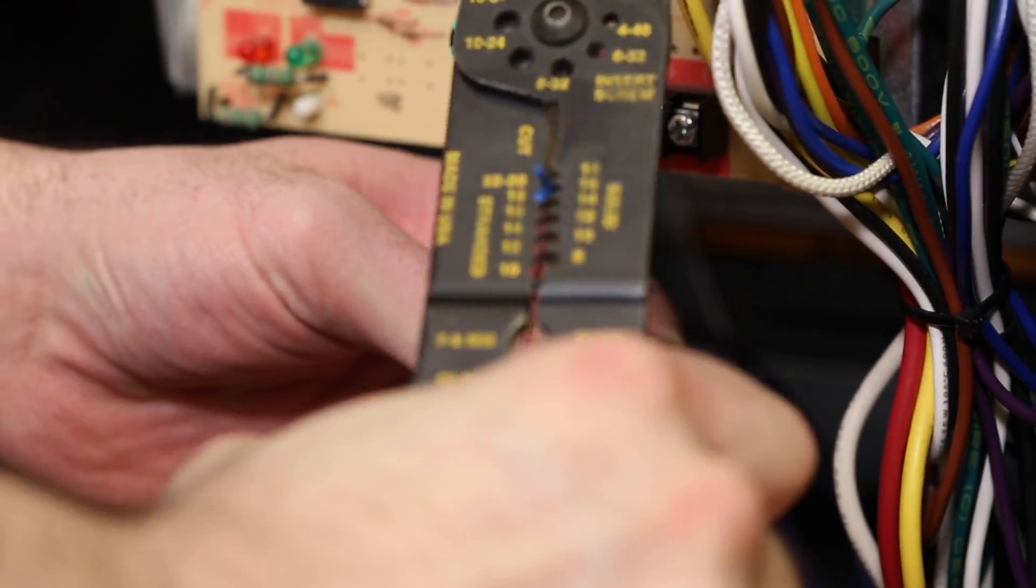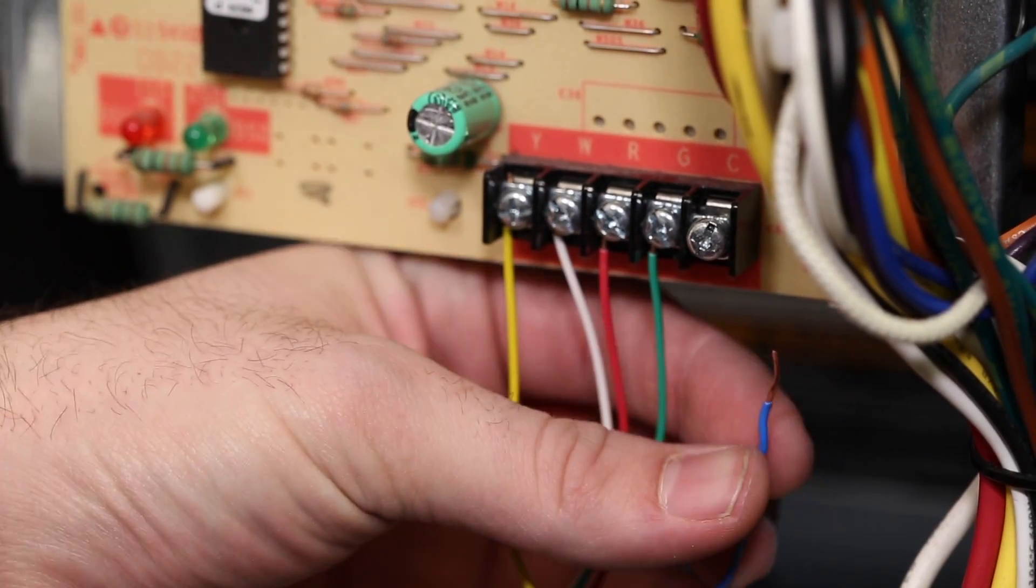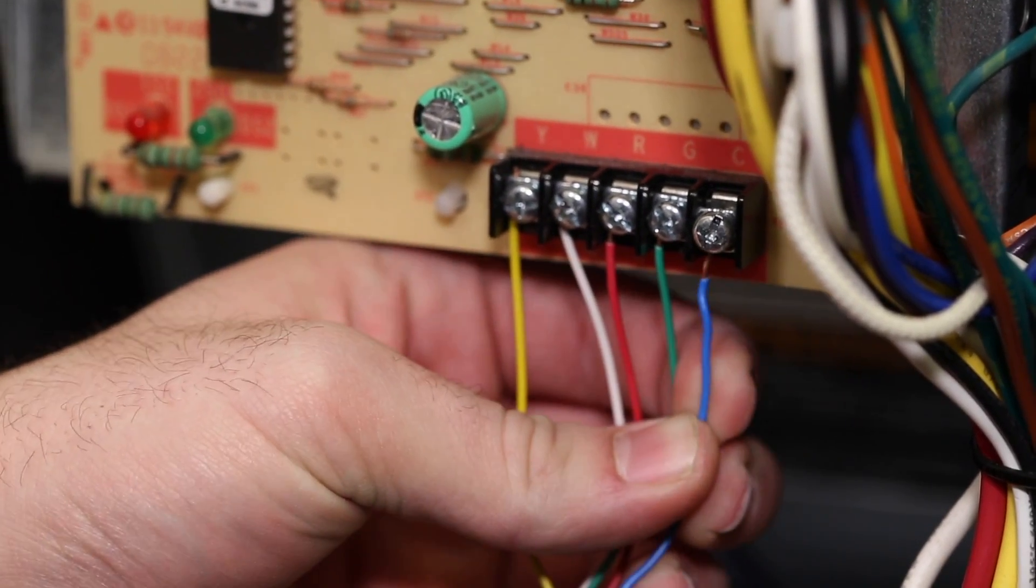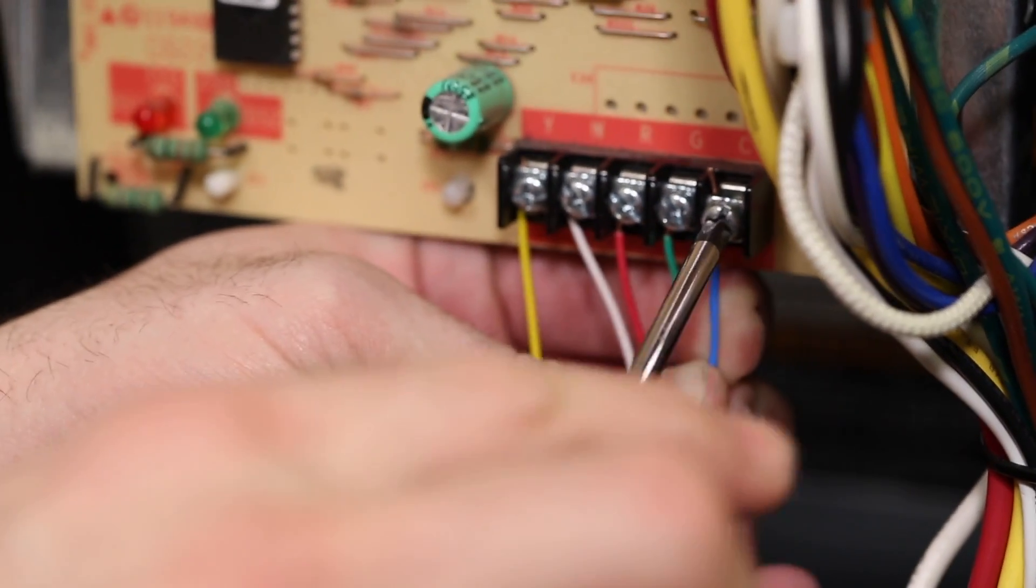Using a wire stripper, expose a quarter inch of wire at the end and screw it to the C terminal on the control board. On most control boards, you simply loosen the screw, insert the exposed wire to the side of the screw, and tighten.